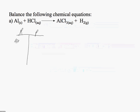For aluminum, which is my first atom, aluminum here is equal to 1. Aluminum on the product side is also equal to 1.